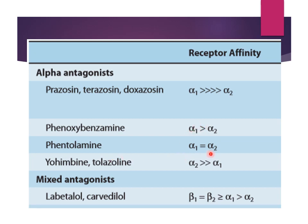Phentolamine is equal. Yohimbine and tolazoline are alpha 2. There are also mixed antagonists — labetalol and carvedilol — which block both beta receptors and alpha receptors.